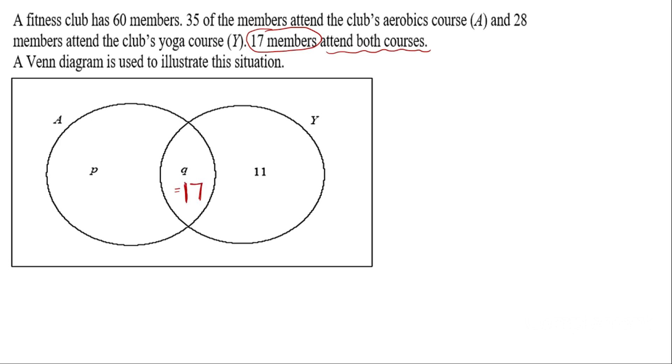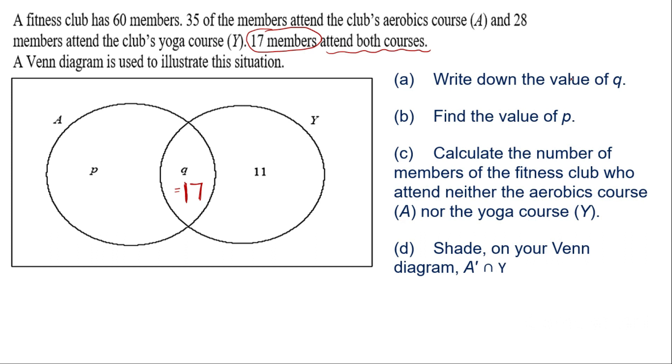Now let me share the set of questions asked. Write down the value of Q. Okay here Q is 17. Because it is the common region, the intersection between A and Y. And you have 17 members.